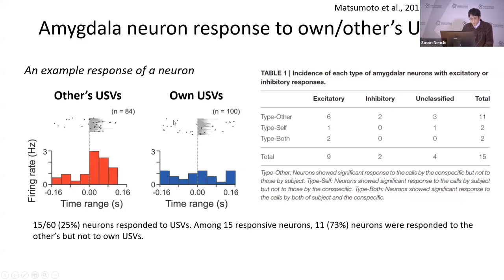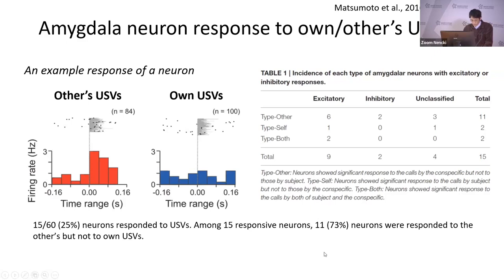This peri-event raster and histogram shows an example response of a neuron. The neuron responds specifically to others' calls, not to the animal's own calls. We found many neurons in the amygdala respond to USVs, and most of them responded specifically to others' calls.